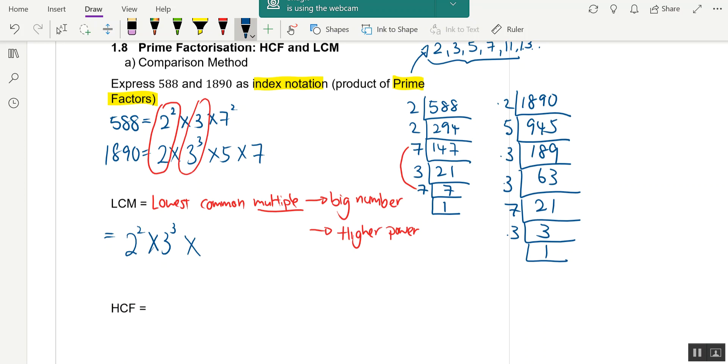Next, five - because I want a bigger number, I have to multiply by five. Sometimes they ask you to leave the LCM in product form, then you just leave it as this. If not, you can work it out in your calculator: 2² times 3³ times 5 times 7², which gives you 26,460, and that is the LCM.